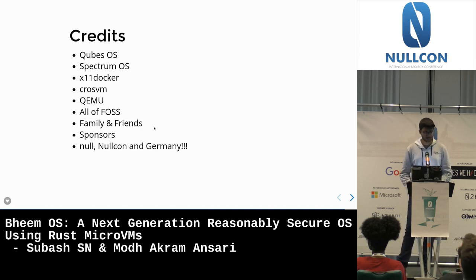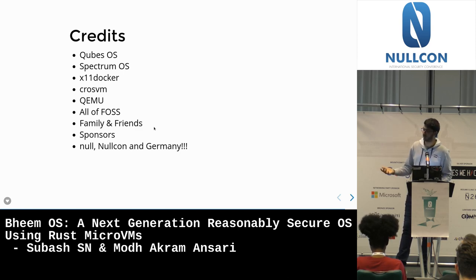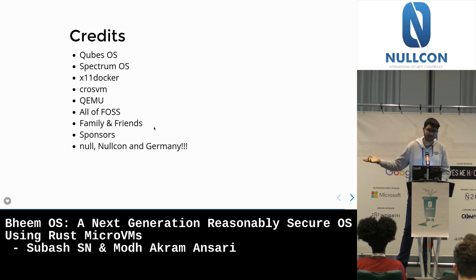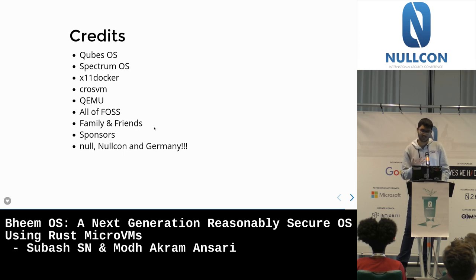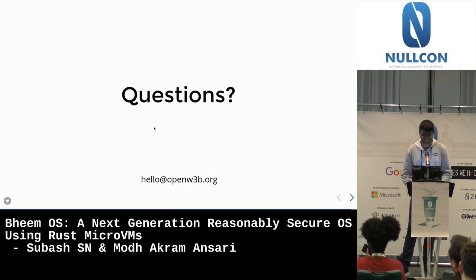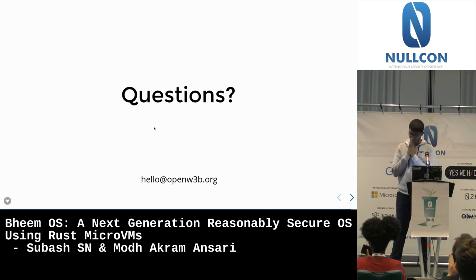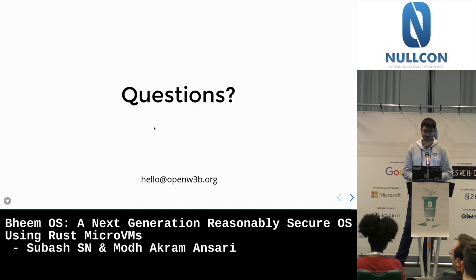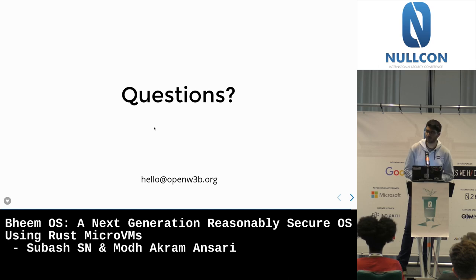Credits to QubesOS and Spectrum OS — another project working on very much the same problem. Thanks to Null community and NullCon: the speaker's first security meetup was at Null community meetups, and one of the first conferences attended was NullCon, so all of this came because NullCon was there. Feel free to contribute — code is at github.openw3b. For questions: one audience member asked about the large attack surface of the hypervisor userspace on the host — the device pass-through services for USB, filesystem, clipboard — and how BeamOS plans to address it. The answer: CrosVM sandboxes VirtioFSD and VirtioGPU as Linux processes, significantly reducing the attack surface to just those components rather than the whole Linux ecosystem.